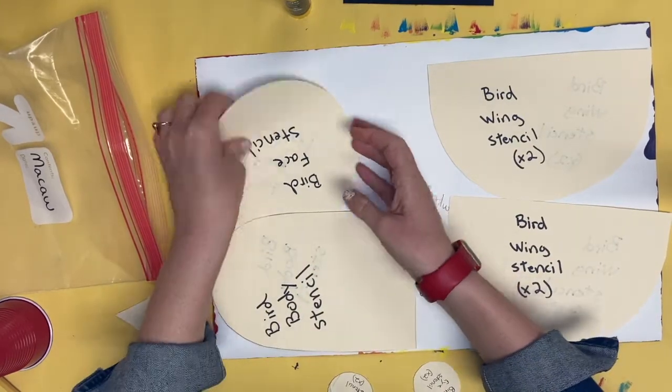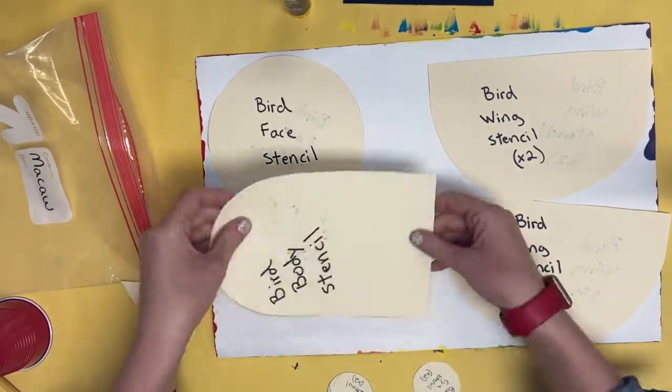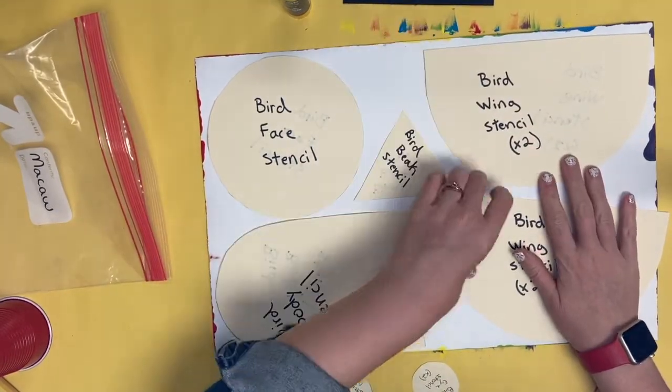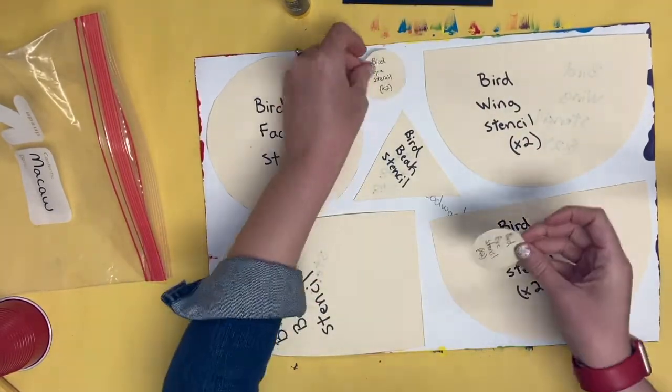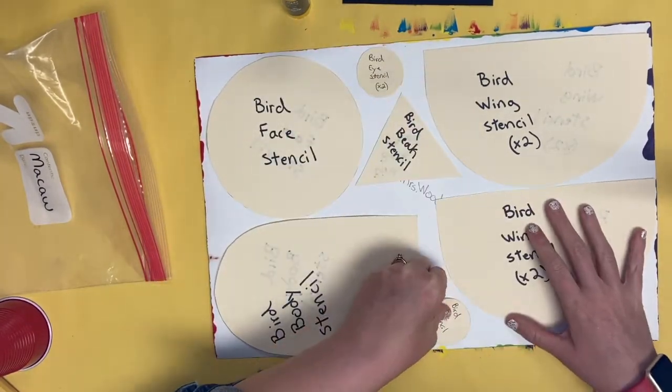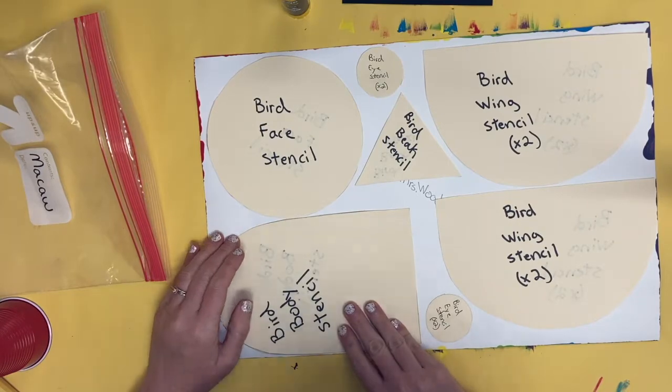There should be one circle for the face, a shape for the body, two wings, a beak, and two eyeballs. Make sure you have them all laid out so you have space for all of them. You might have to move some around to get them all to fit, but they should fit.